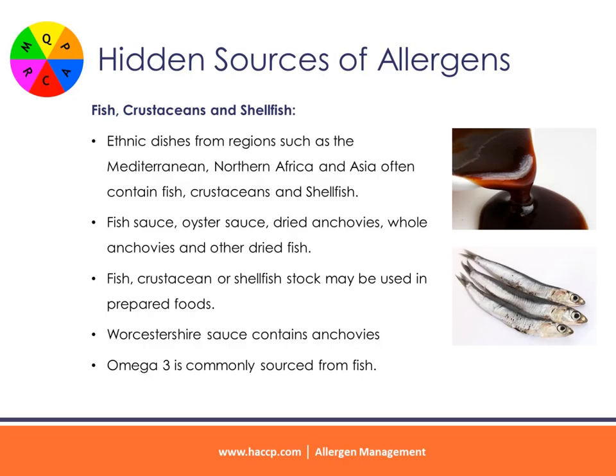Fish, crustaceans, and shellfish: ethnic dishes from regions such as the Mediterranean, Northern Africa, and Asia often contain fish, crustaceans, and shellfish. This includes fish content within sauces and ingredients such as fish sauce, oyster sauce, dried anchovies, whole anchovies, and other dried fish, crustacean, and shellfish varieties. Fish, crustacean, or shellfish stock may be used in prepared foods, both within foods and sauces. Traditional Worcestershire sauce contains anchovies. Omega-3 is commonly sourced from fish.